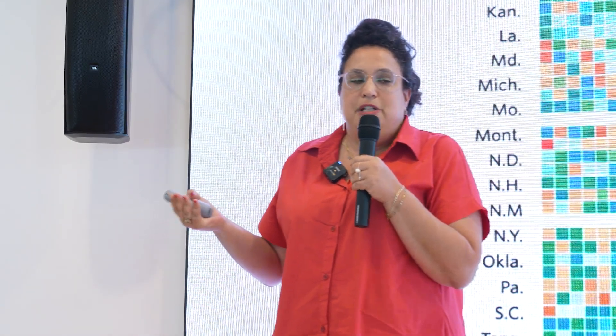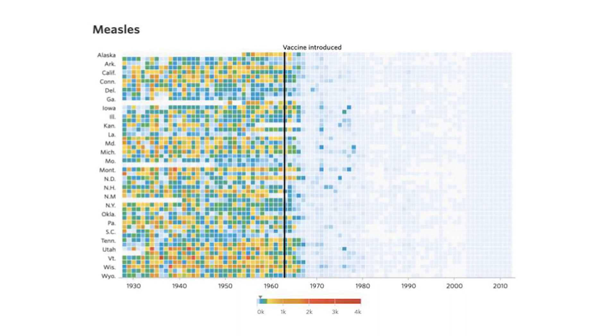I want to go in depth on the superpowers of data visualization — there are three. The first is that it's easy to digest. You can hope people will read a full report all the way through, but visualizing it makes it so much easier. This diagram shows measles cases in the US over the last 100 years — it's a ton of complex information, but very easy to digest.